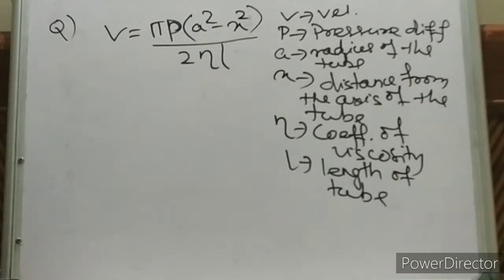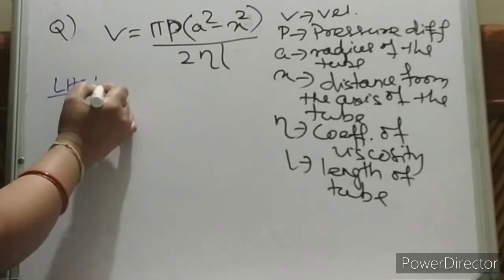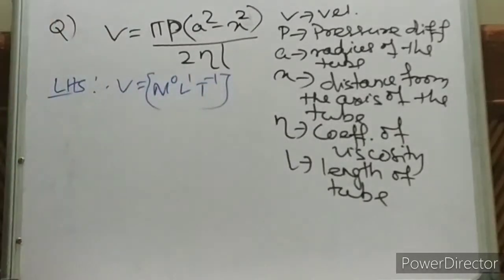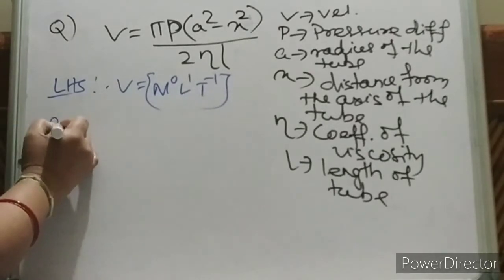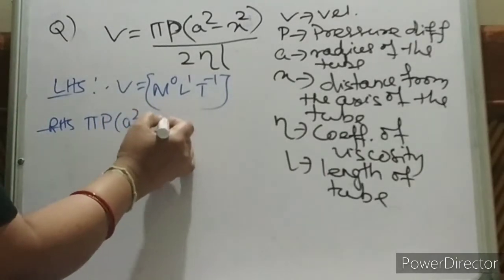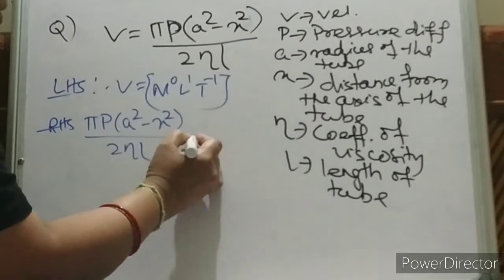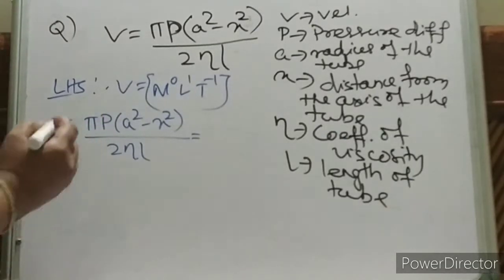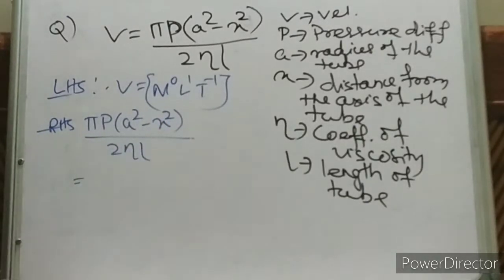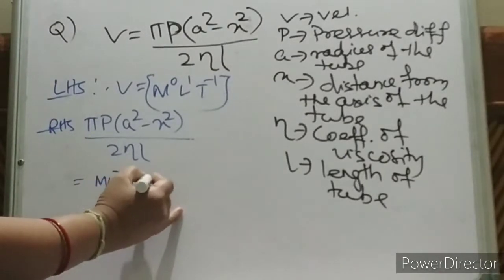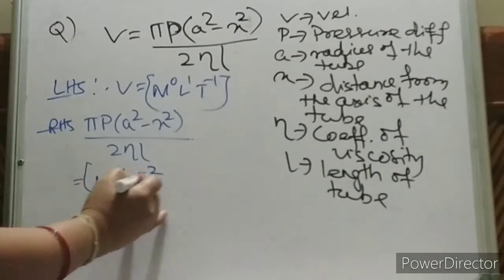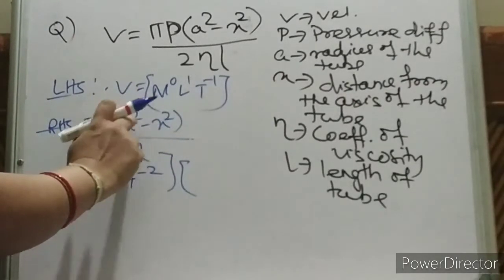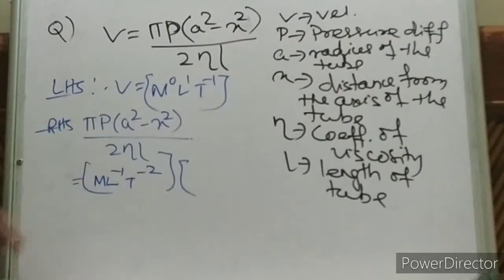Let me start. LHS is velocity. The dimension of velocity is M⁰ L¹ T⁻¹. Now RHS: π has no dimension. P is pressure, which is force per area, so its dimension is M L⁻¹ T⁻². A² and x² are both lengths squared, so A² − x² is simply L². Both are lengths so you can subtract them.